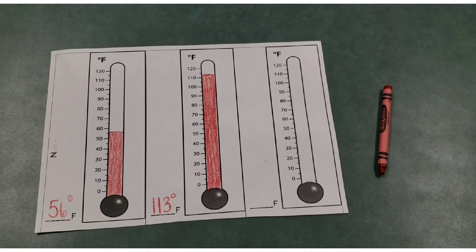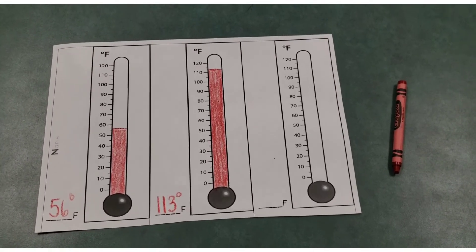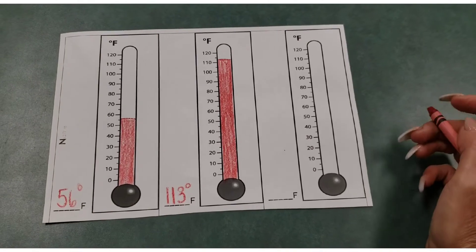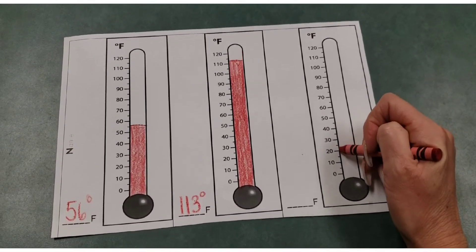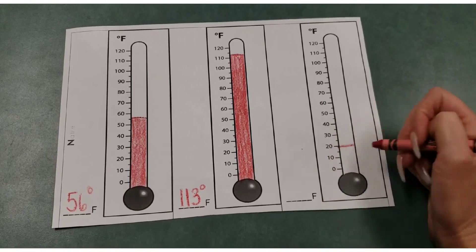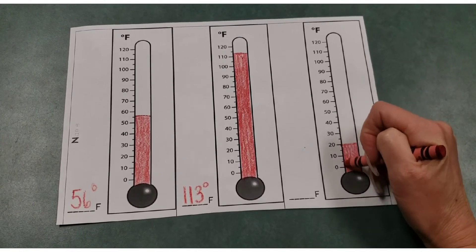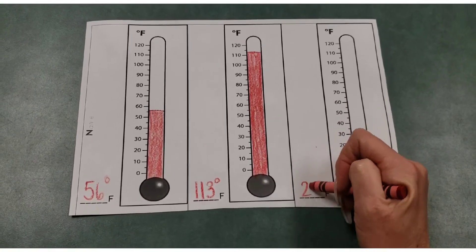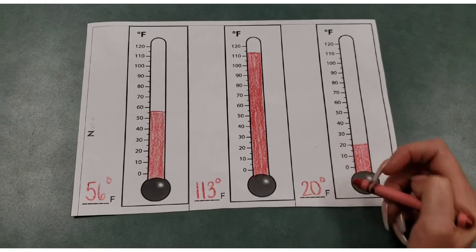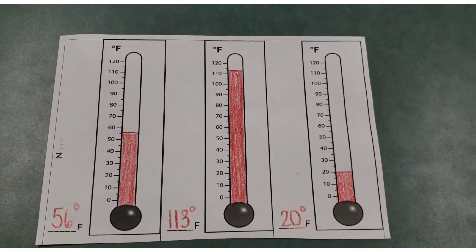For our last experiment, it was with the cold water. I would have them mark the 20 degrees Fahrenheit. So here's 20. They would draw a line and color it in. And then they would write 20 degrees Fahrenheit. And now we're done.